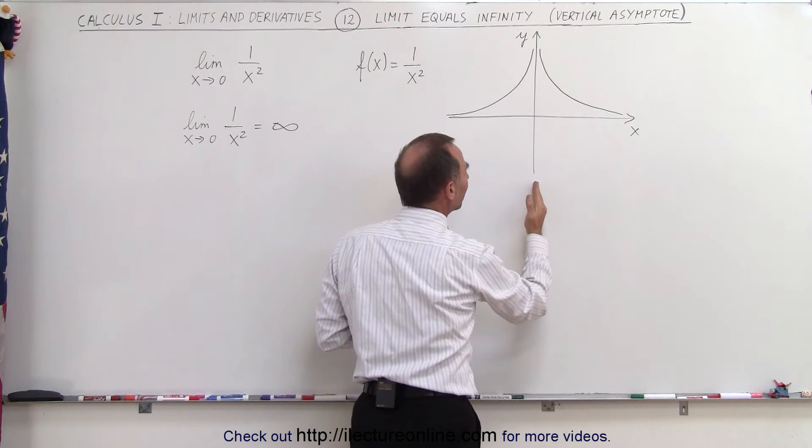Now what that means also is that in this particular case, there's an asymptote. An asymptote is a line, typically a straight line, either vertical or horizontal. It can sometimes also be at an angle. But in this case, the y-axis becomes the asymptote.